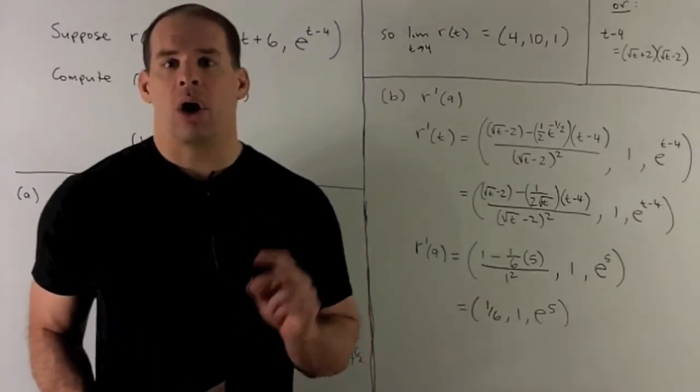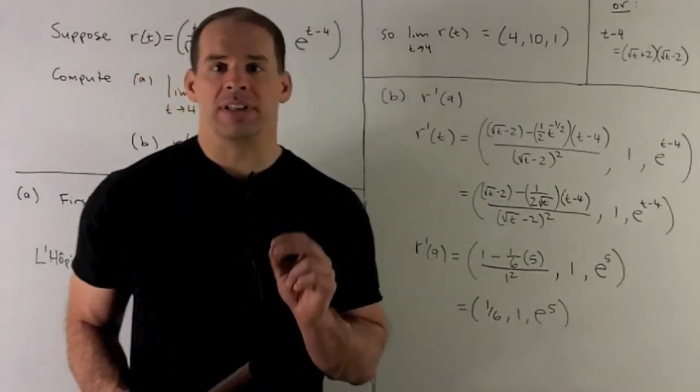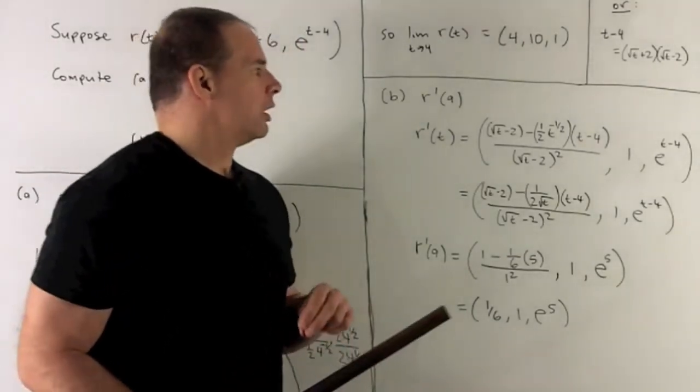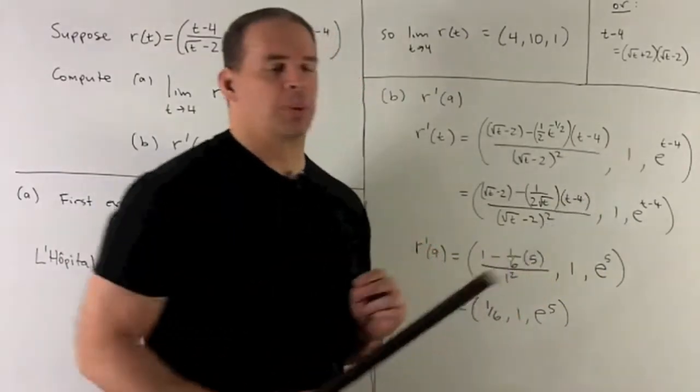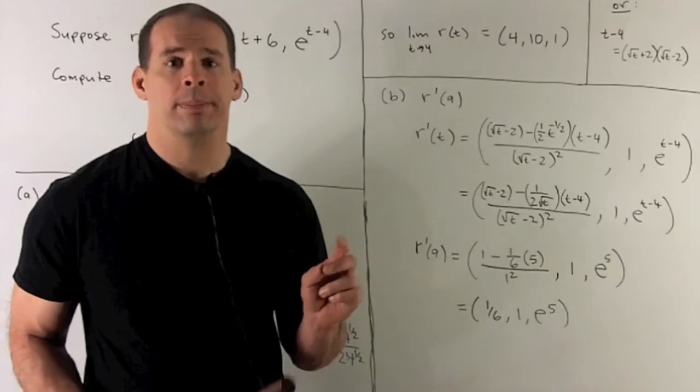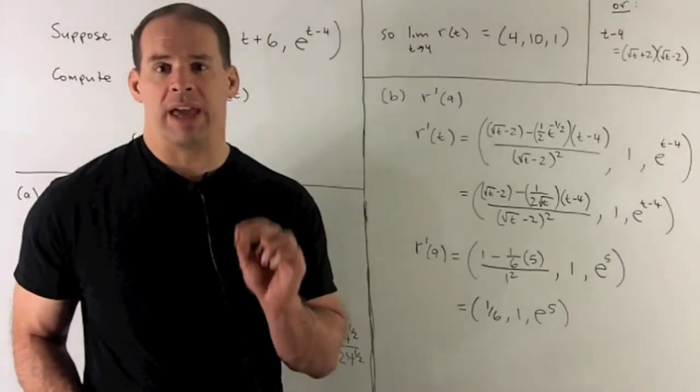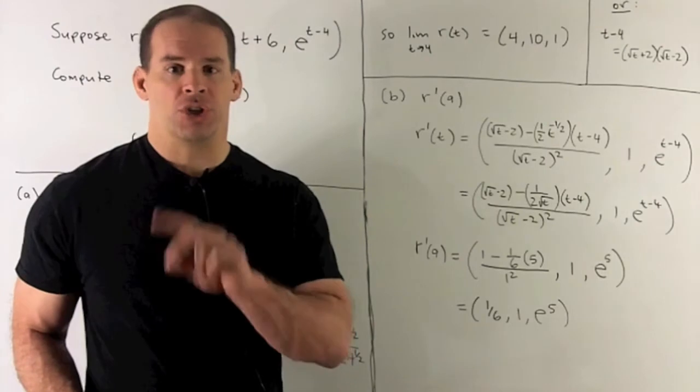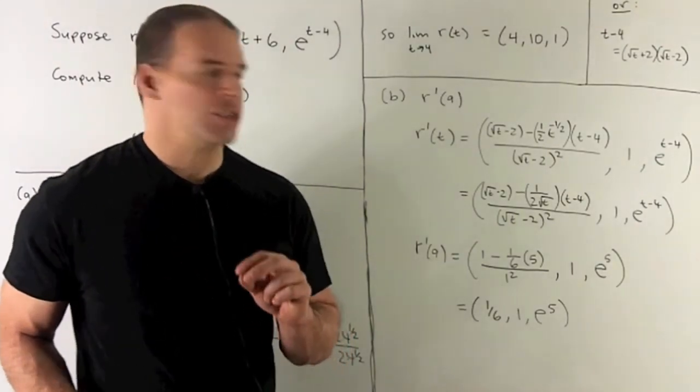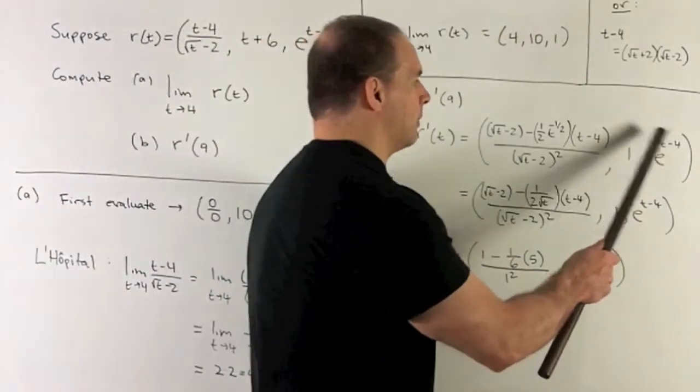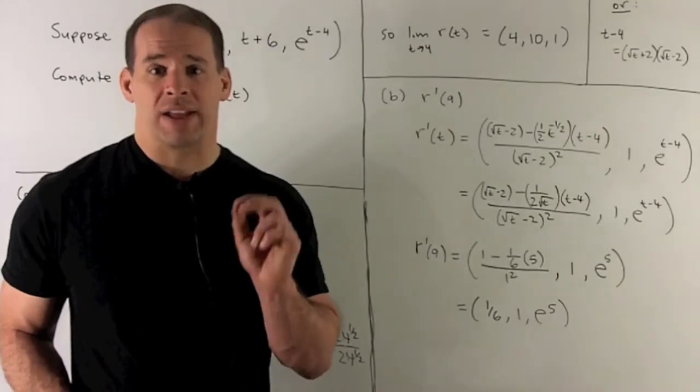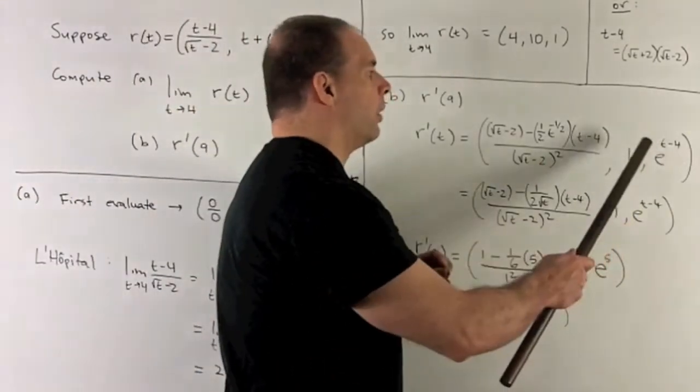Second part: r'(9). We're going to take the derivative in each component, then put 9 in. The y component is easy, that goes to 1. For the z component, we have e^(t-4). The rule for the derivative of an exponential is: you return e to the function and multiply by the derivative of your function. So we rewrite e^(t-4). The derivative of t-4 with respect to t is 1. That's the derivative in the z component.